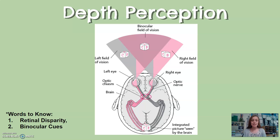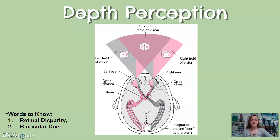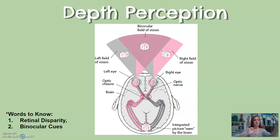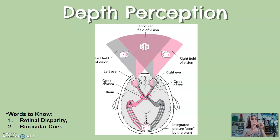Because we have retinal disparity, we get an image processed from both the left and right sides put together. We get a better, more full image because the right visual field comes in slightly to the right and the left visual field is slightly to the left of that object. So we're getting a more full picture.